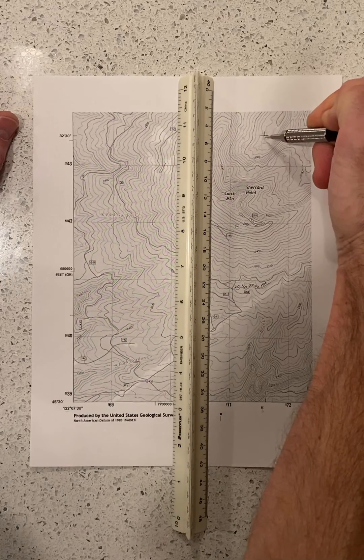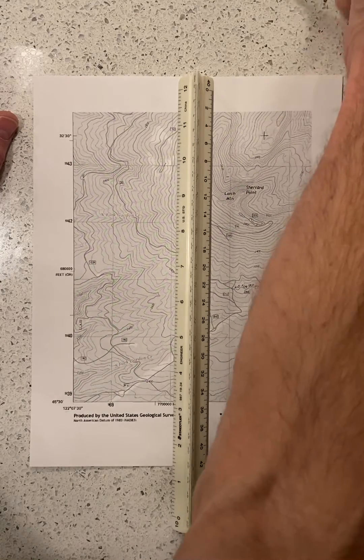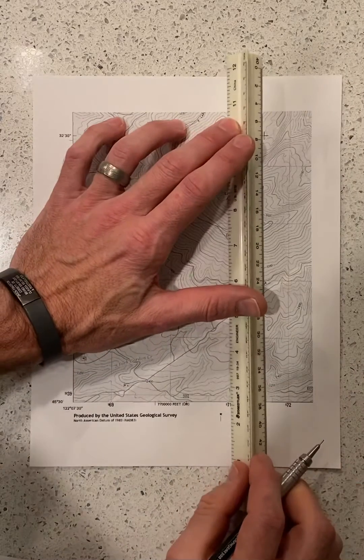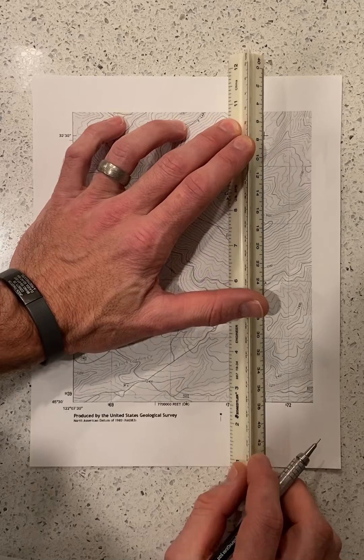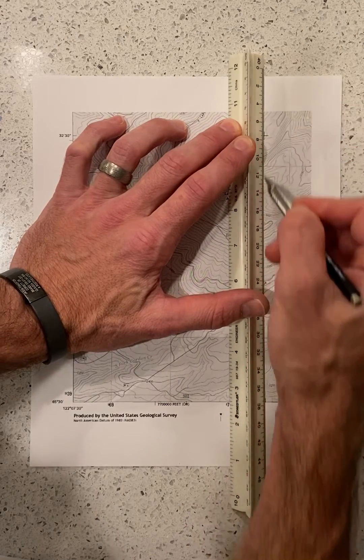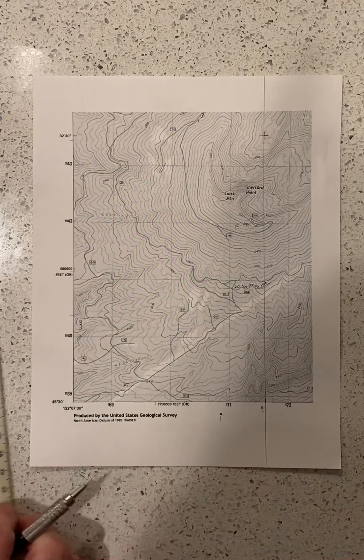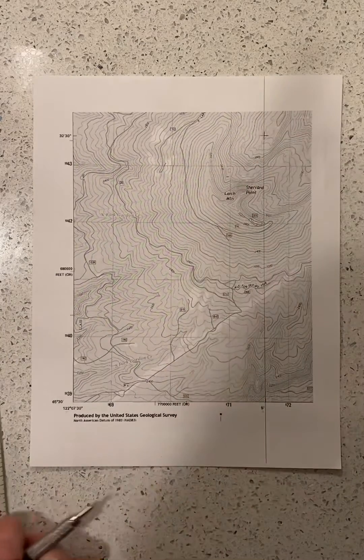I'm going to actually connect that with just a lightly drawn line on my map. That's going to basically put in that line of longitude, and I'm going to do the same over here.